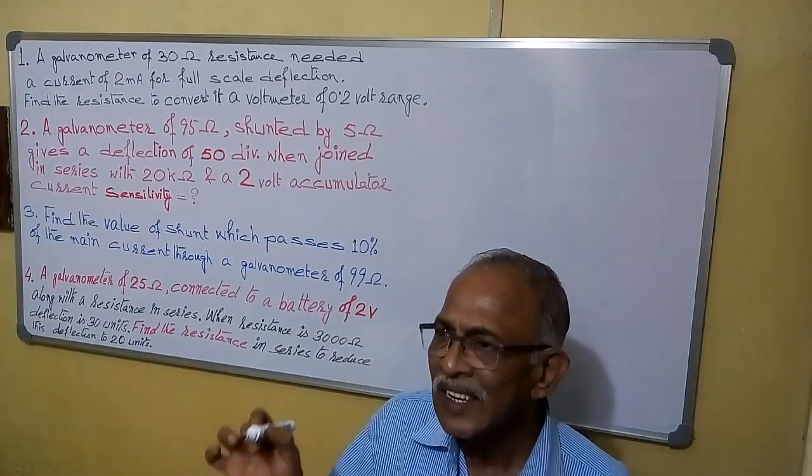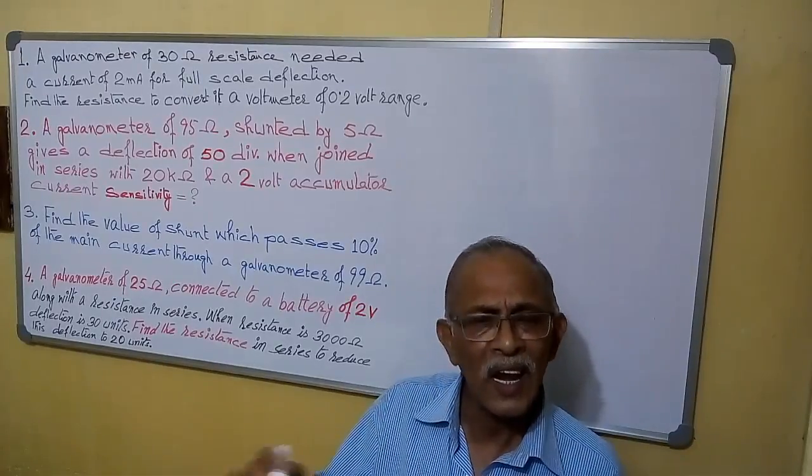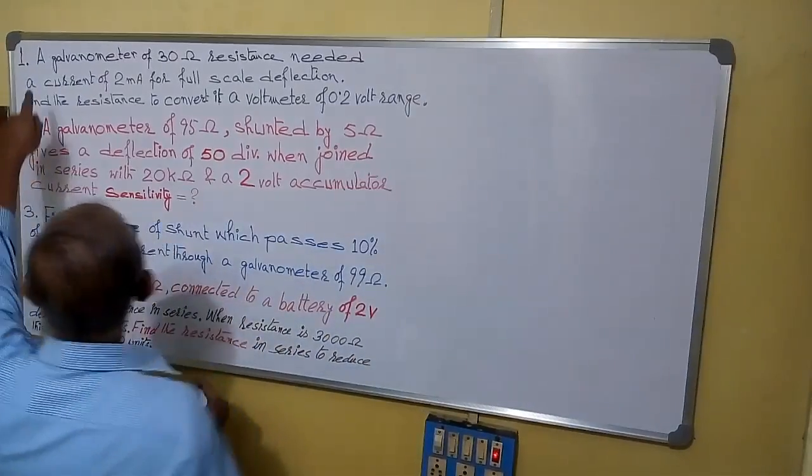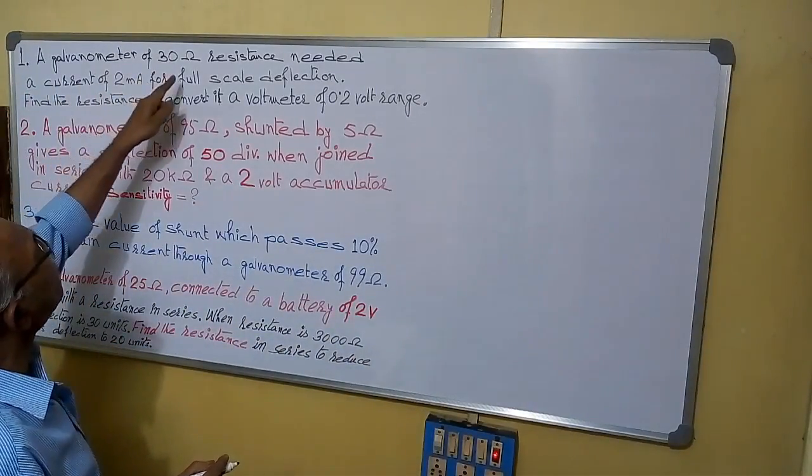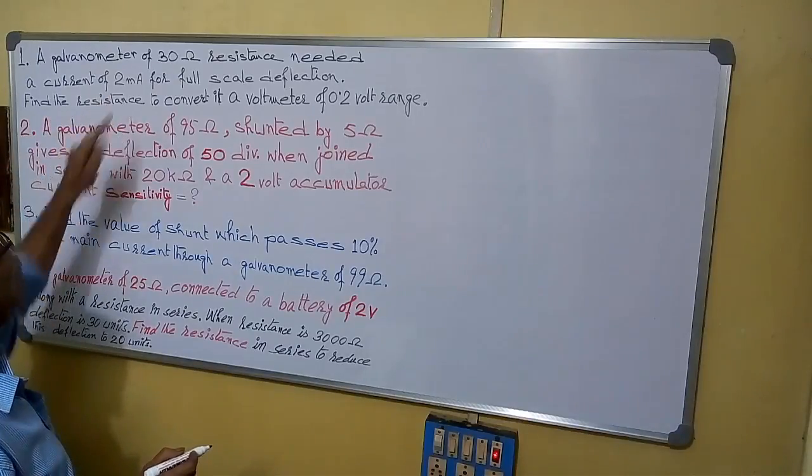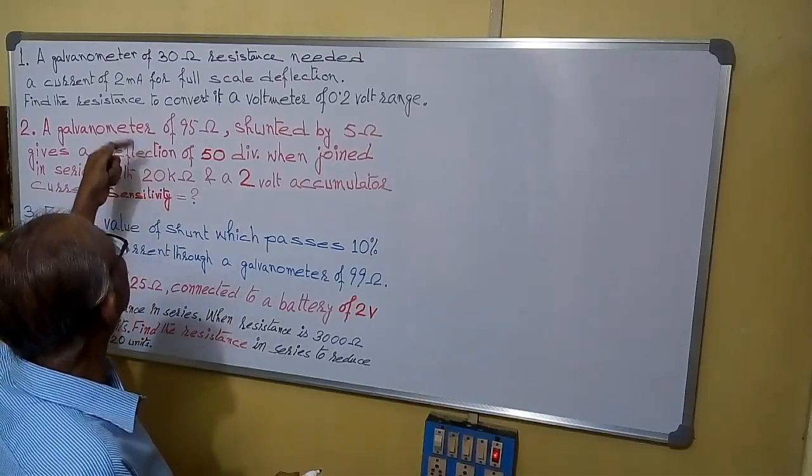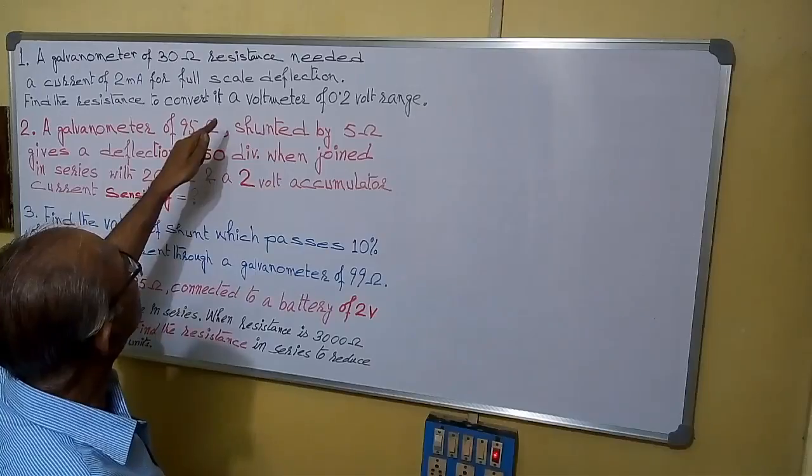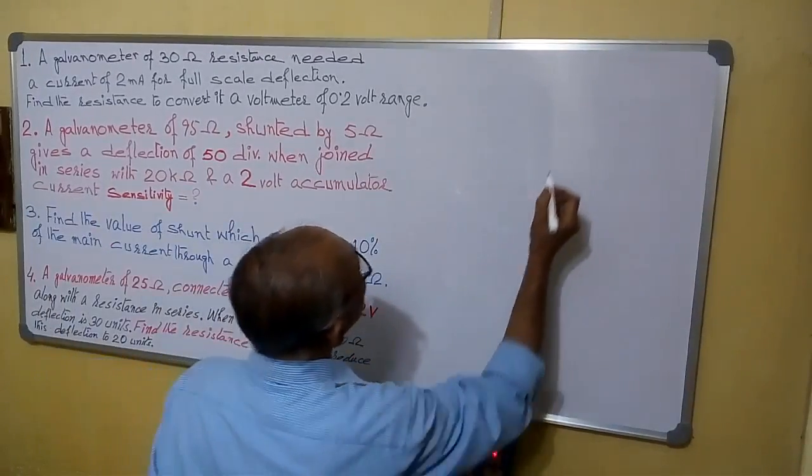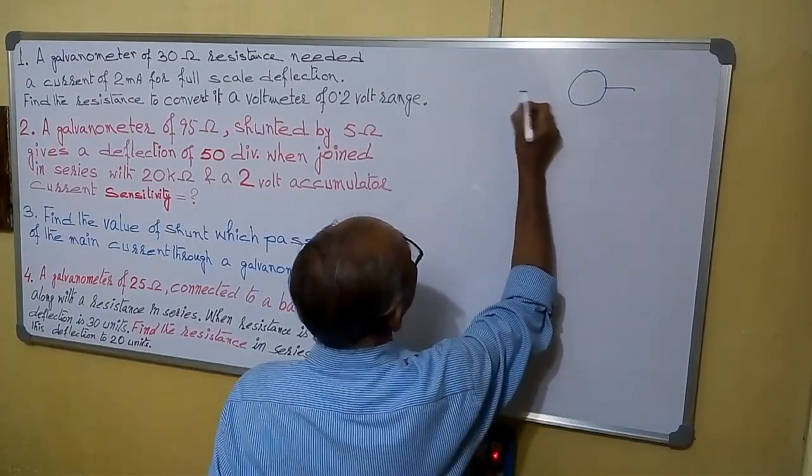Welcome. I will discuss certain problems of galvanometer and shunt in different cases. Let us see one by one. The first question is: a galvanometer of 30 ohm resistance needed a current of 2 milliampere for full-scale deflection. Find the resistance needed to convert it to a voltmeter of 0.2 volt range. Suppose this is the galvanometer and here we are adding a resistance.